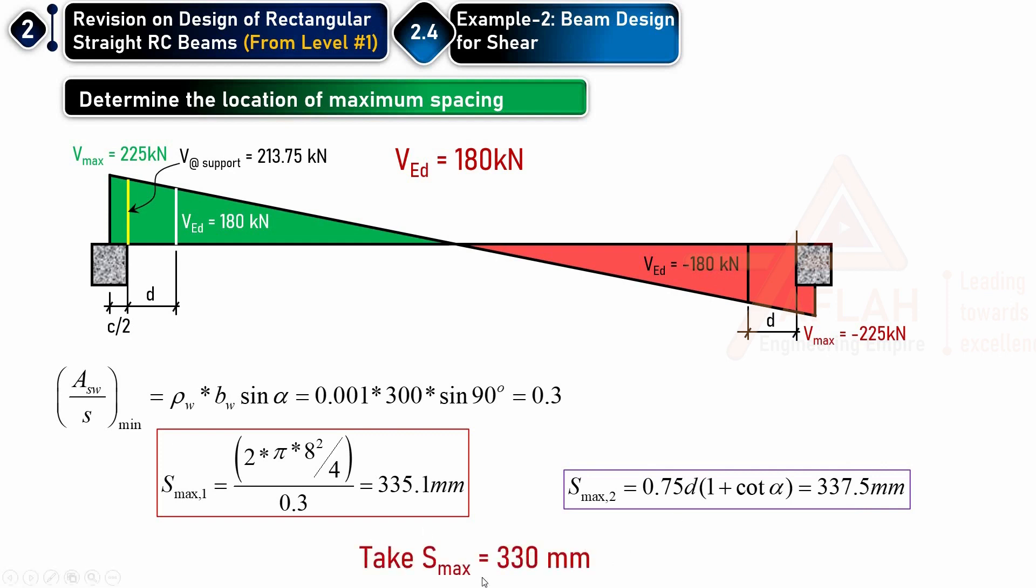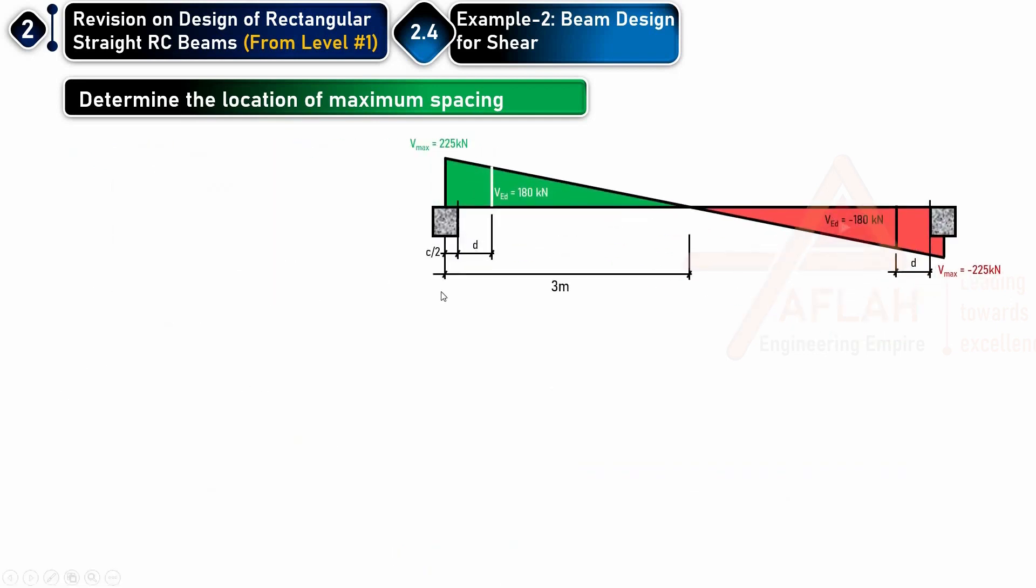Now this will be the maximum spacing that I will have. What I should know is where should I start this spacing. We know that the distance from the center up to this end, up to this midpoint, will be three meters. Now with this as w/s equals this as per the formula, we want as w/s minimum.